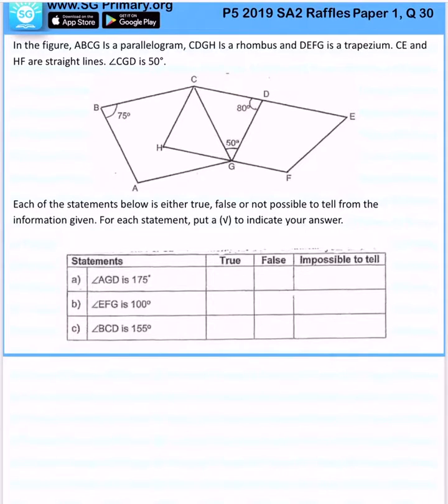In the figure, ABCG is a parallelogram, CDGH is a rhombus, DEFG is a trapezium. Angle CGD is 50 degrees.